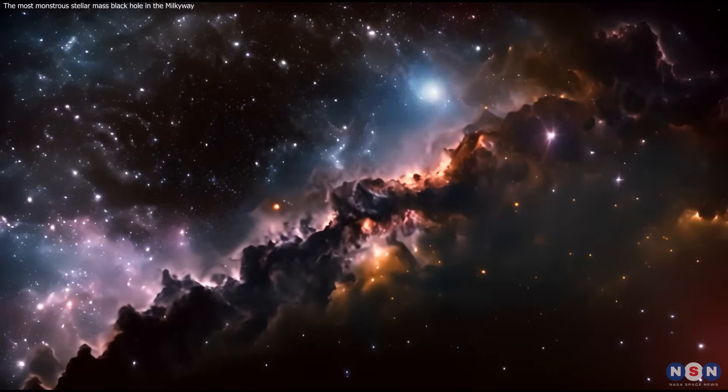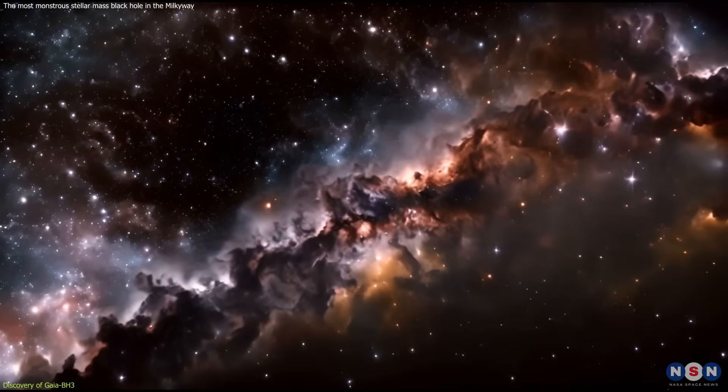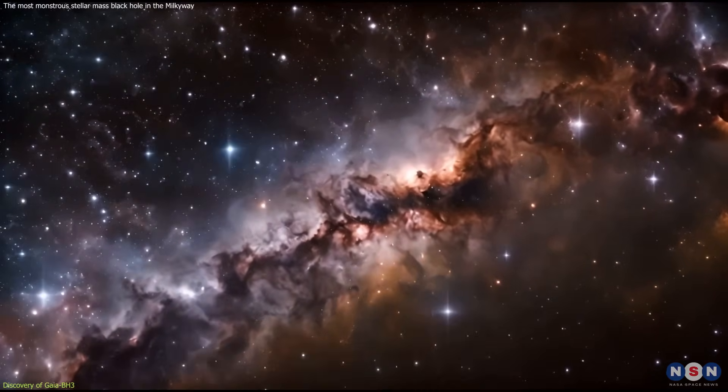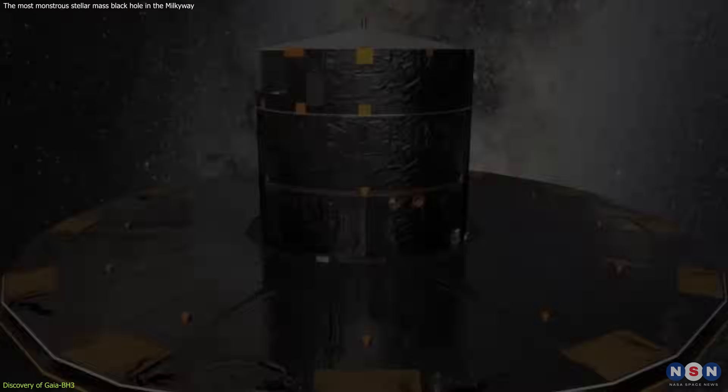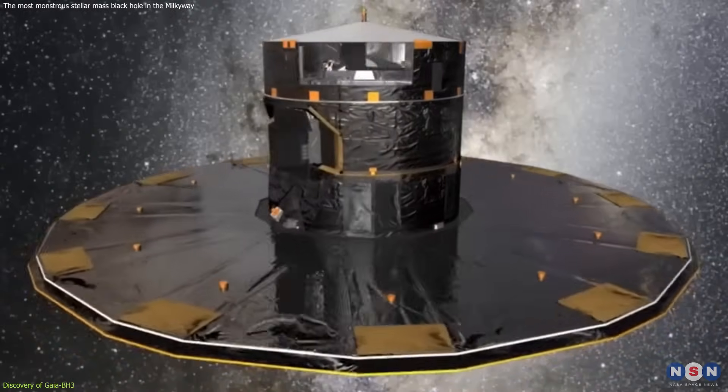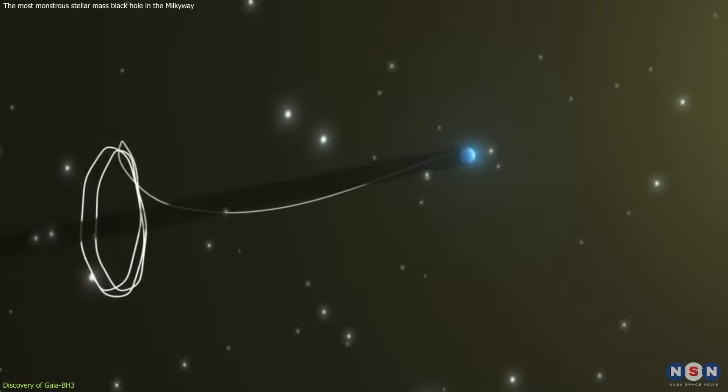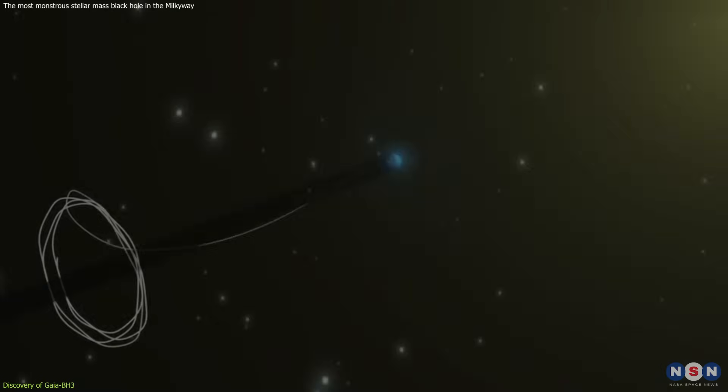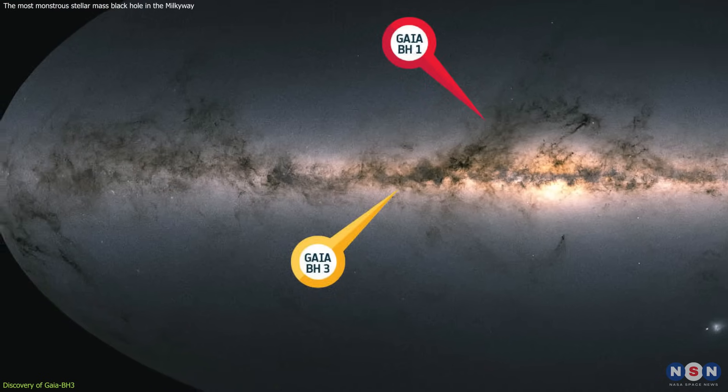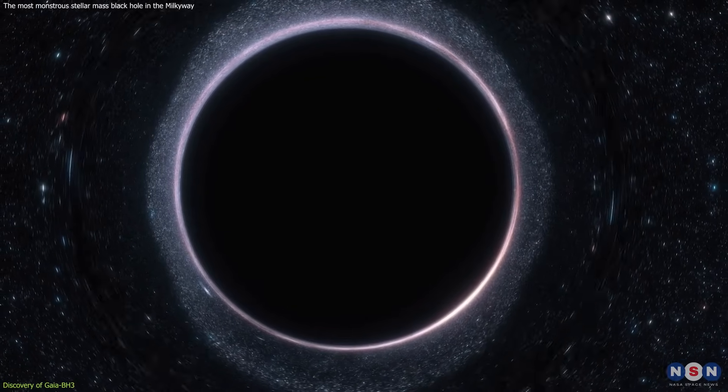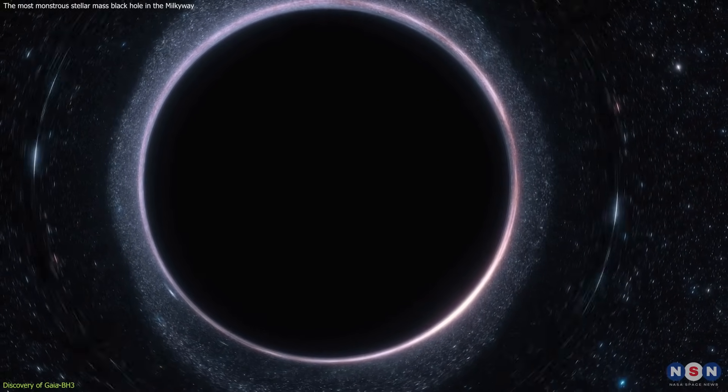In the vast star-studded expanse of our Milky Way, a monumental discovery has emerged, reshaping our understanding of the cosmos. The European Space Agency's Gaia telescope, orbiting far above Earth, has made a groundbreaking revelation. A stellar mass black hole named Gaia BH3 is astonishingly massive and surprisingly close to our own solar system.